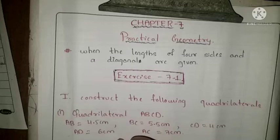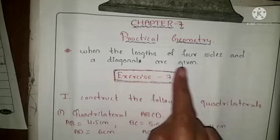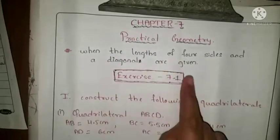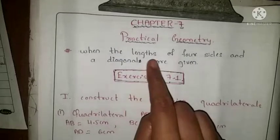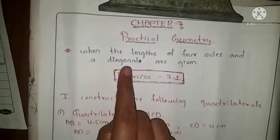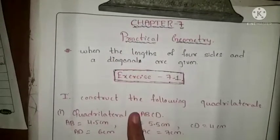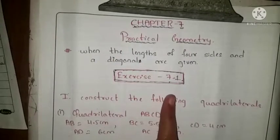When the lengths of four sides and a diagonal are given, this concept we will solve in Exercise 7.1. Using these measurements we are going to solve Exercise 7.1.